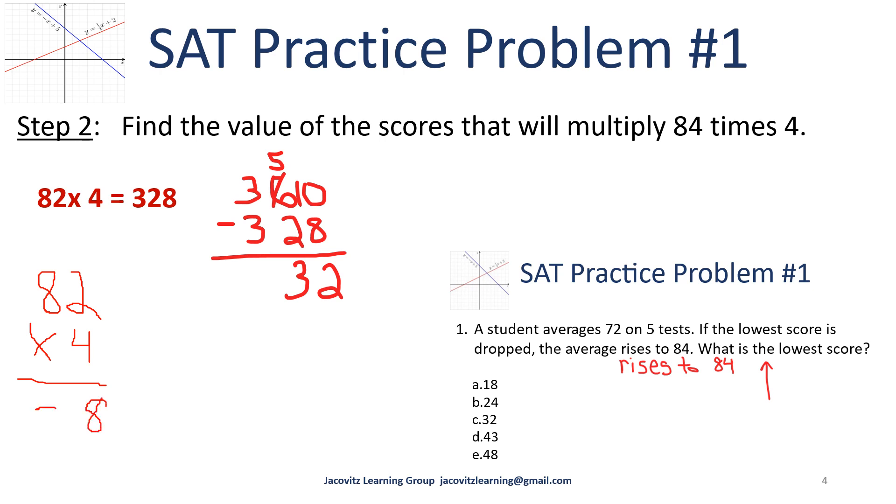So you have 336. That's 84 times 4 is 336. Now you take 360 minus 336 and you get 32, and your answer is C.